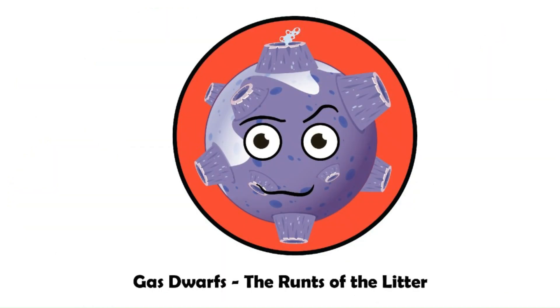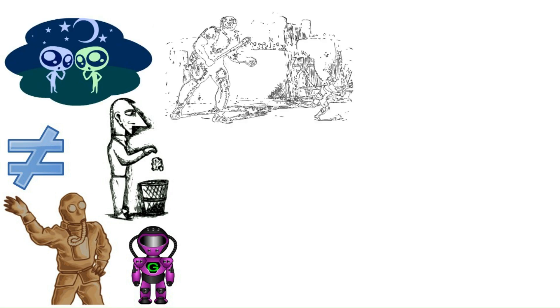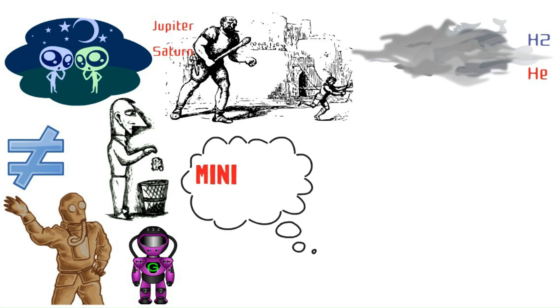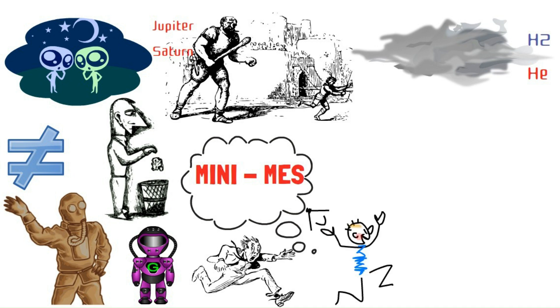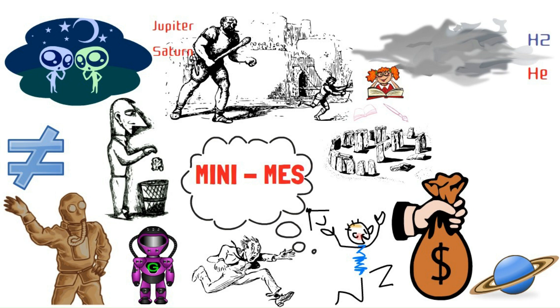Gas dwarfs, the runts of the litter. Not all gas giants are equal. We have gas dwarfs, the runts of the litter when it comes to these giants of the cosmos. They're smaller than their big brothers like Jupiter and Saturn, but still pack a punch with their thick atmospheres, primarily composed of hydrogen and helium. Think of gas dwarfs as the mini-me's of the gas giant world. While they might not be as massive or awe-inspiring, they still offer valuable insights into planetary formation processes. Studying their composition and structure can help us understand how gas giants form and evolve, and how they differ from their larger counterparts.